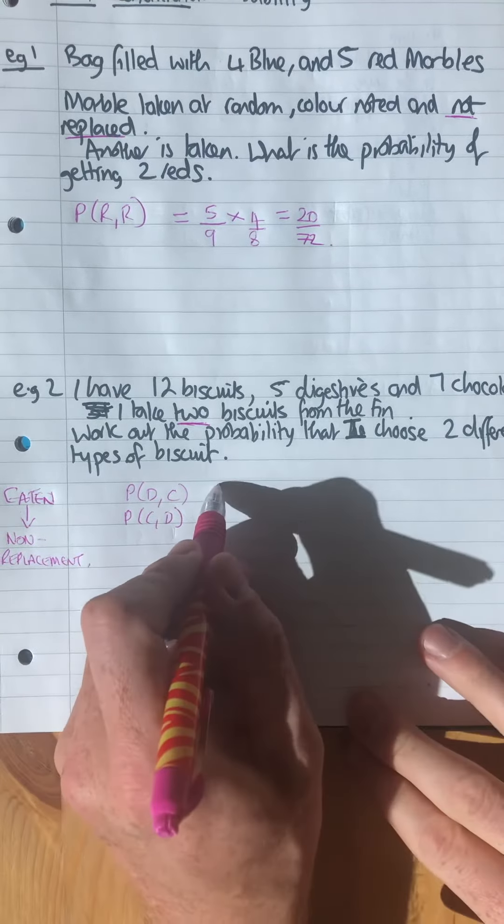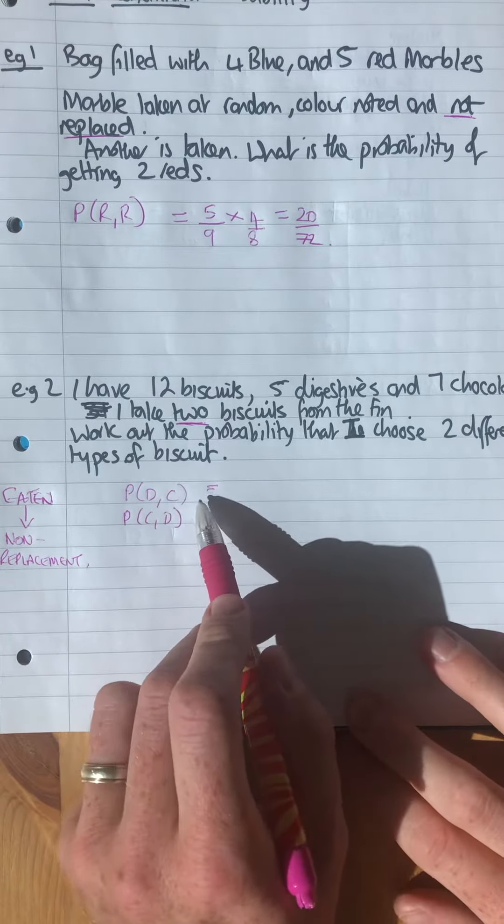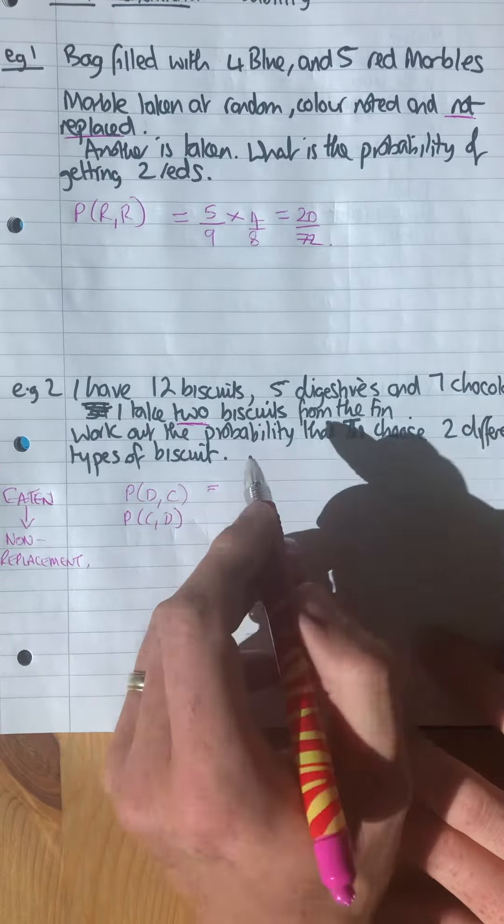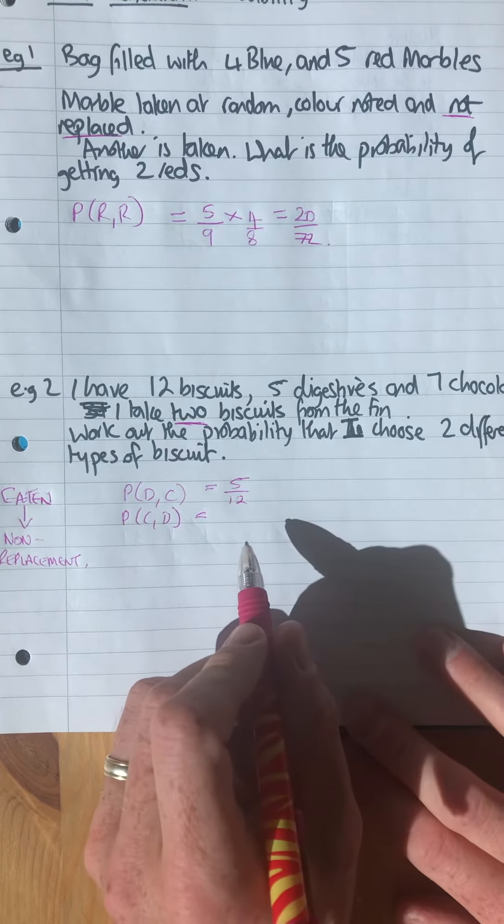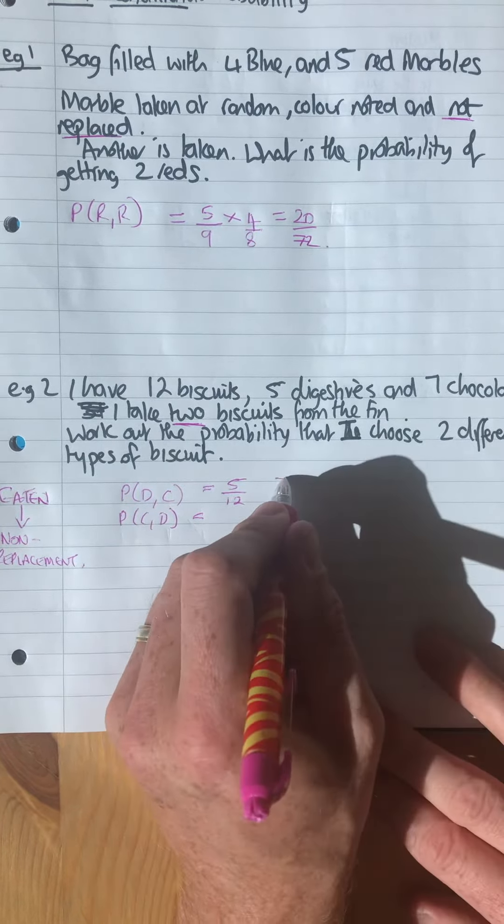What's the probability of getting a digestive the first time? There's 5 out of 12. What's the probability of getting a chocolate then after you've taken the digestive? There's still 7 chocolate ones, but now there's one less biscuit because you've taken a digestive in the first one, so that goes down to 11. That's to do with non-replacement.